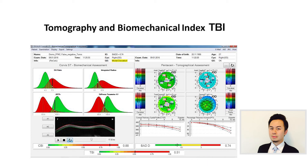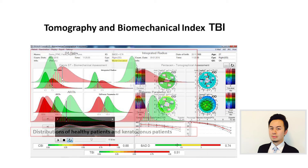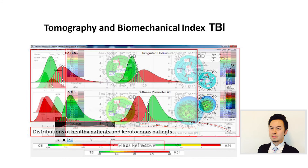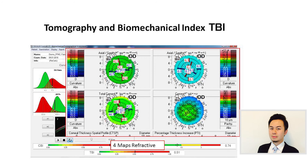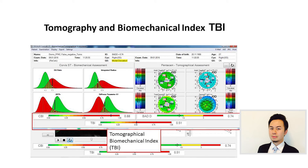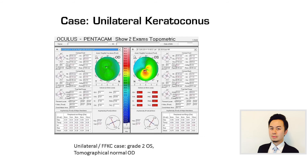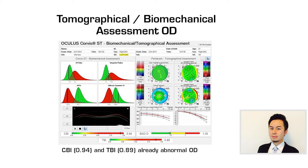The Pentacam actually has this feature called the TBI — the Tomographic Biomechanical Index. It is a combination of corneal tomography (the BAD) and also the biomechanical response of the cornea (the CBI). In this example of unilateral keratoconus, the left eye has features of keratoconus while the right eye doesn't have any topographical features. For the right eye, the BAD is within normal range; however, the CBI is around 0.94, which is very high. Therefore, the combined TBI is very high at 0.89, showing that the right eye has abnormal biomechanical response despite normal topographical features.